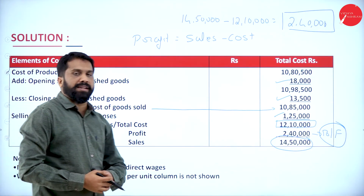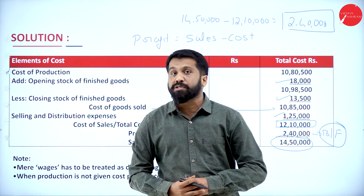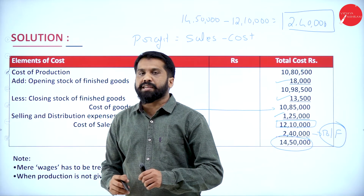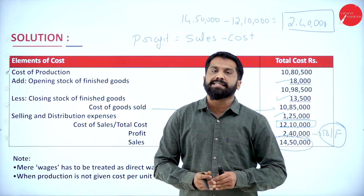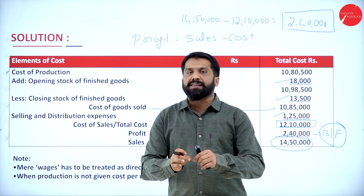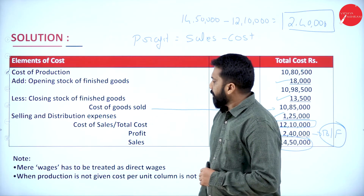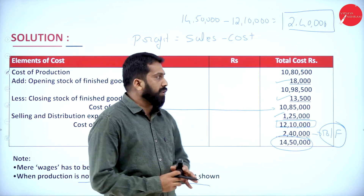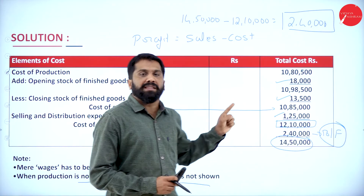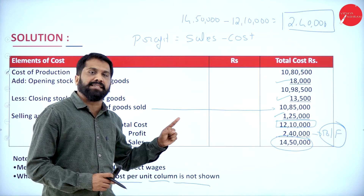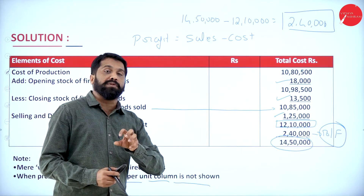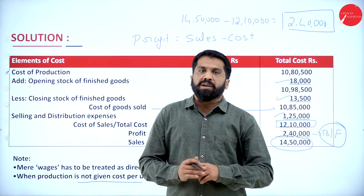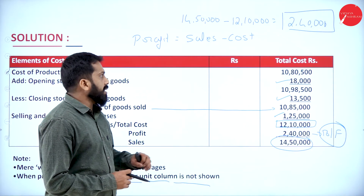Two important notes for today's problem: First, mere wages must be treated as direct wages. If no additional information is given and wages is mentioned, we assume it is direct wages — unless they specifically say it is indirect. Second, production units were not given in this problem, so cost per unit column is not shown. If units are given — say 1,000 units — then each amount is divided by 1,000 to get cost per unit.